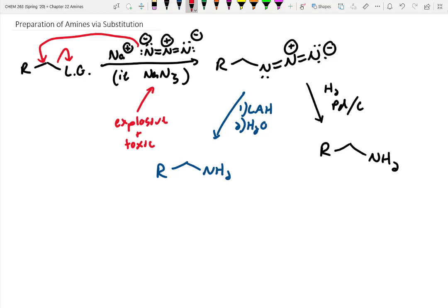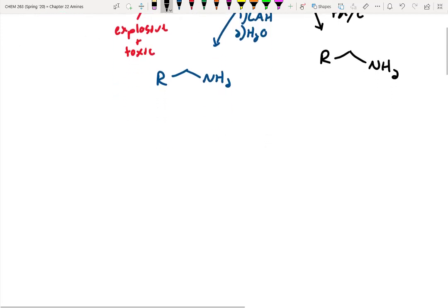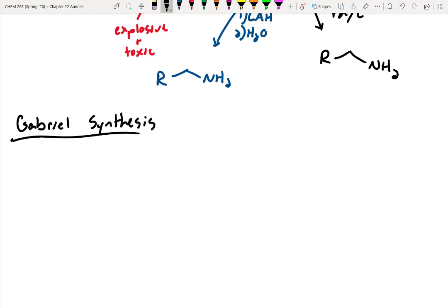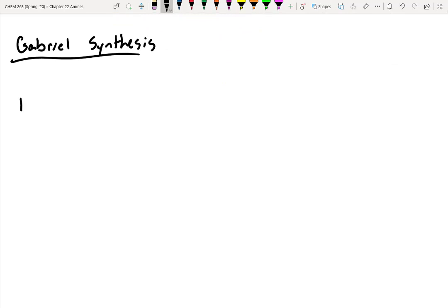A better method that was developed later is called the Gabriel synthesis. And the Gabriel synthesis is far less toxic. However, the atom economy is quite poor. So let's take a look at the Gabriel synthesis. And the starting material in the Gabriel synthesis is this bicyclic aromatic molecule. And this starting material is called phthalimide. It's commercially available. It's cheap. It's easy to find.